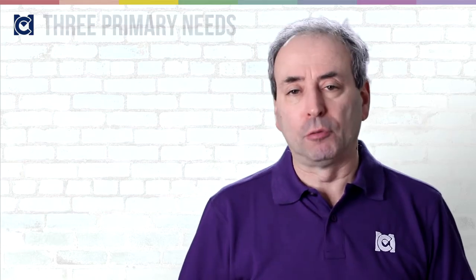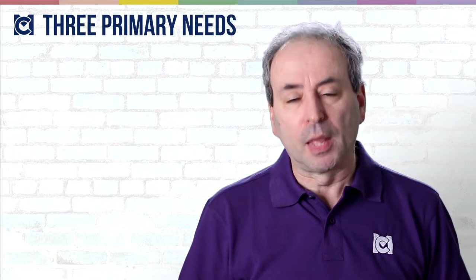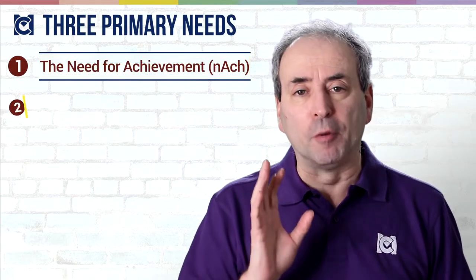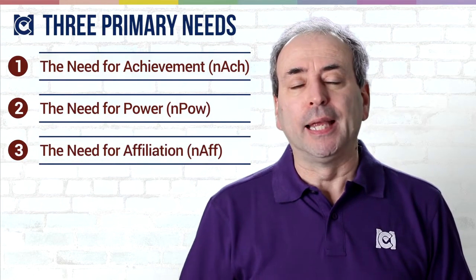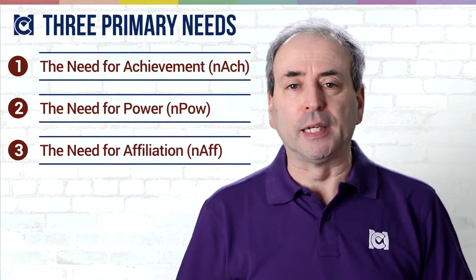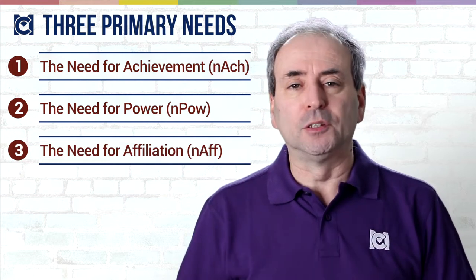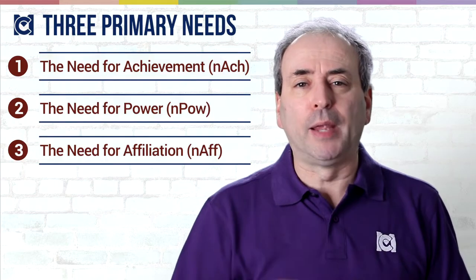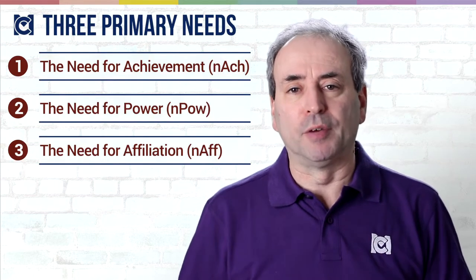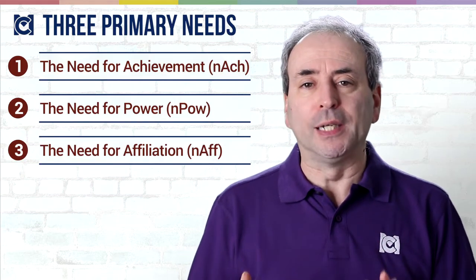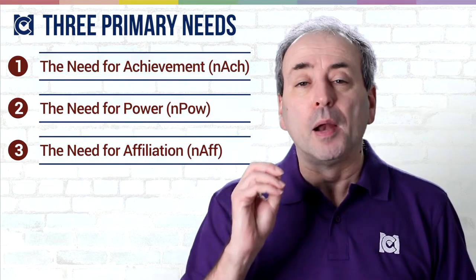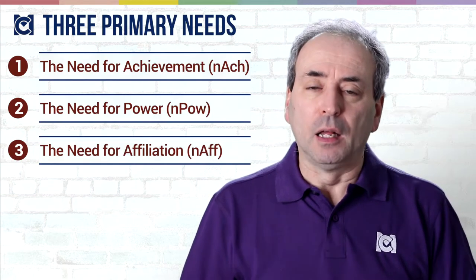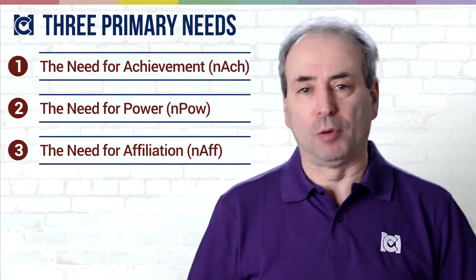Let's assume that none of them is keen initially to get involved in sales and none of them has significant experience in sales. What McClelland says is that we each have three primary needs in the workplace: the need for achievement, the need for power, and the need for affiliation. Each of us has a different balance of those three needs, and for most of us one of those needs will predominate. The more you understand which needs motivate each person, the better you can tailor how you motivate them.